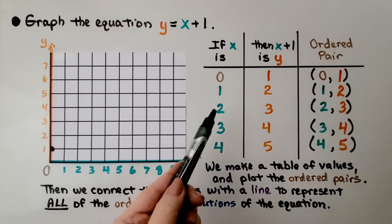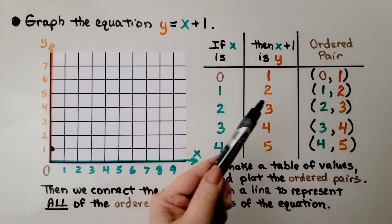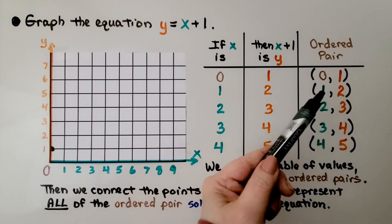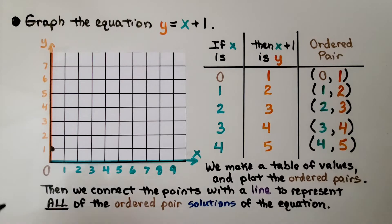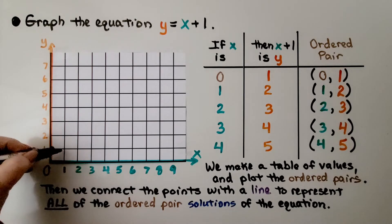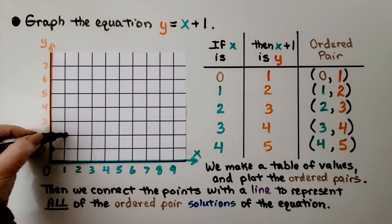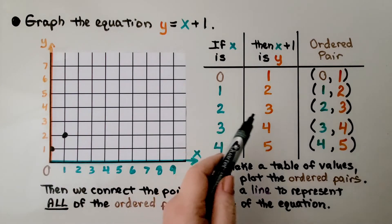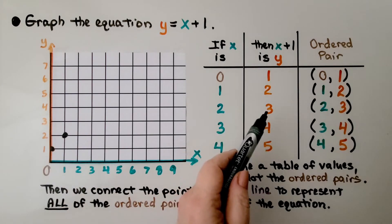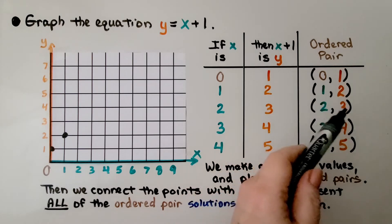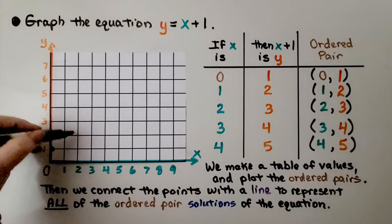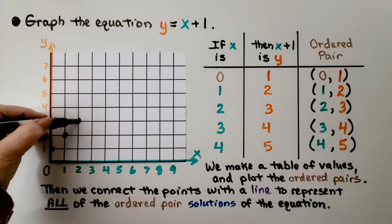If x is 1, we add 1, that means y is 2. Our ordered pair is 1 for x and 2 for y. We have 1 for x right here and 2 for y. If x is 2, we add 1, then y is 3. Our ordered pair is 2, 3. We have 2 for x and 3 for y.